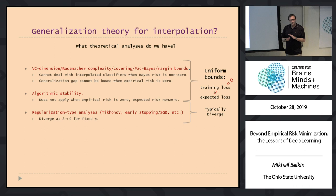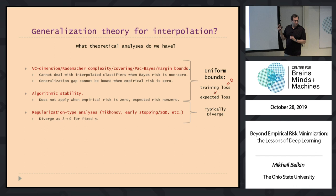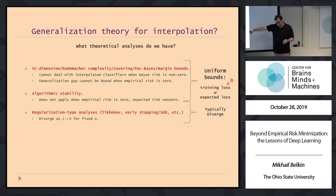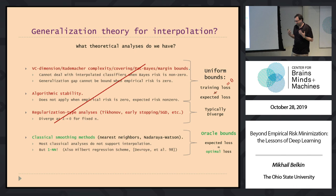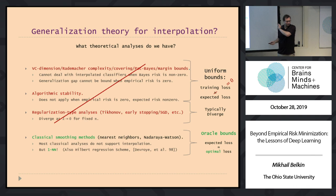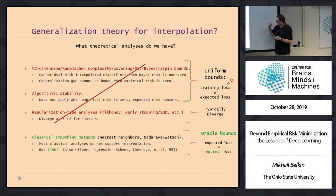Regularization-type analyses — Tikhonov, early stopping, and others — offer a slightly different kind and are not necessarily based on those bounds. But most of them actually diverge as the regularization parameter goes to zero or as gradient descent steps go to infinity. However, there is at least one example of something that really works: one nearest neighbor. There is also an interesting Hilbert regression scheme by DeVroye, but those are based on oracle bounds — they connect expected loss to optimal loss directly, without going through empirical loss at all.